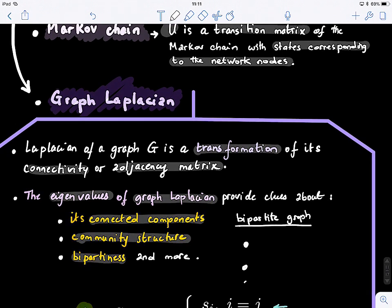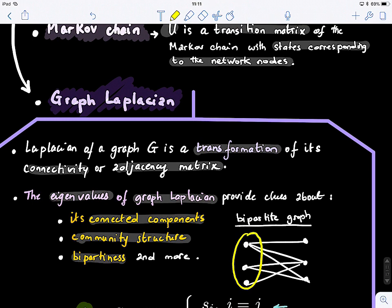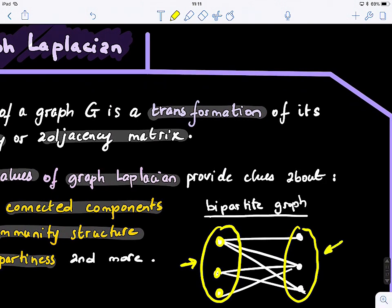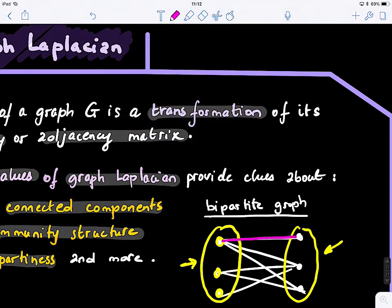In a bipartite graph, we have one set of nodes and another set, where nodes within each set are disconnected — there are no edges connecting them within the same set. However, going from one set to the other, we find that each node in the first set connects to at least one node in the other set.